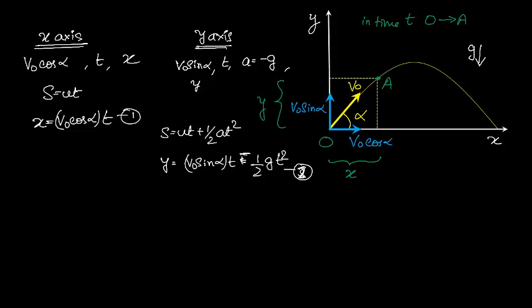I can use equation 1 and I can say T equals X divided by V0 cos alpha. And I am going to substitute that in equation 2. Maybe I will call this as 3. So substituting 3 in equation 2, what do we get?